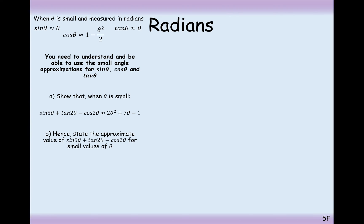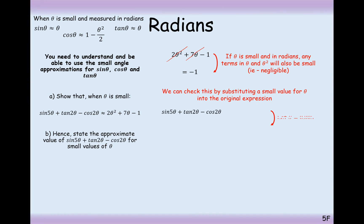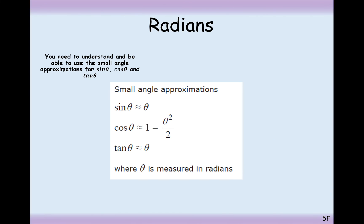Part B of this question is, hence state the approximate value for theta is small. In this case here, when theta is small, if theta is small and in radians, any theta and theta squared terms will also be small, i.e., negligible. So these two here will just cancel out if theta is very small, so we're just left with minus 1. We can substitute this into the original expression, a small value for theta, and we get minus 0.96, which is very small indeed.